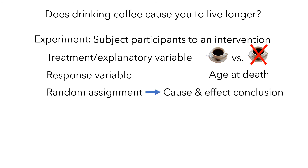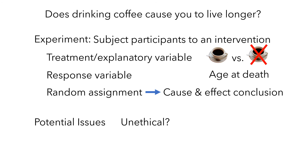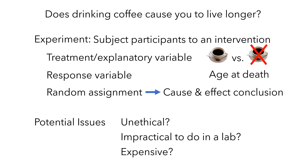Now, you might be thinking: if experiments let us draw cause-and-effect conclusions, why don't we always use them? Well, there are some potential issues with experiments. First, some experiments are unethical — it's probably not okay to force some people to drink coffee and to prevent others from doing so. Generally, you need to do experiments in a laboratory setting, but it might be impractical to do this, and similarly, it might be expensive. So when these issues arise, researchers turn to observational studies.